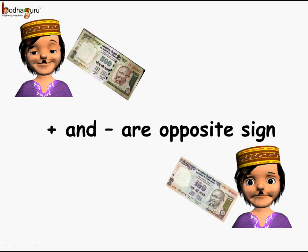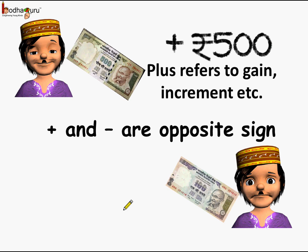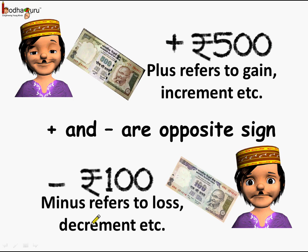If we represent profit and loss in terms of integers, then we can say on Monday Karim made plus 500 rupees, because plus refers to gain or increment. The next day we can say Karim made minus 100 rupees, as minus refers to loss or decrement in general. So that was the use of integers in profit and loss — profit we indicate by plus sign and loss we indicate by minus sign.